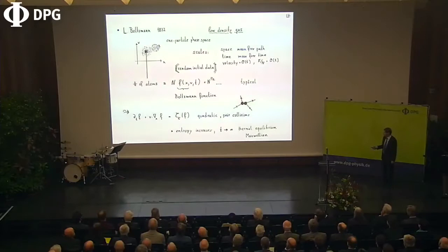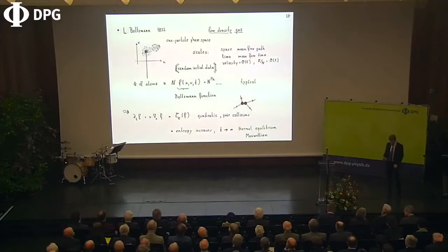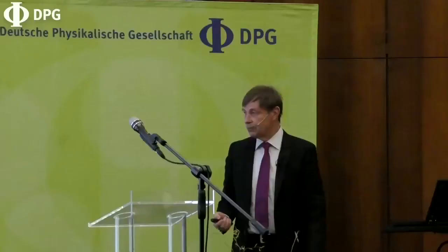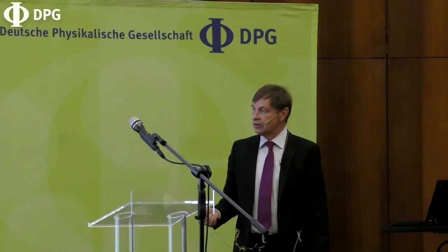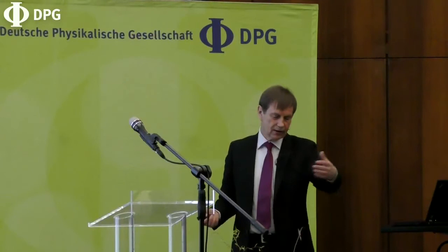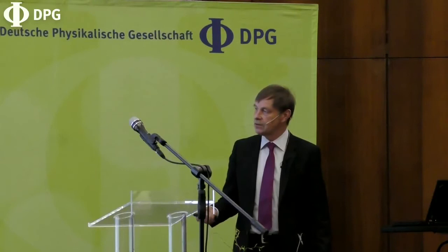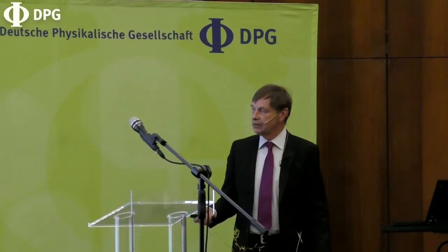What Boltzmann argued is that at a collision, the velocities of the two incoming particles can be considered as more or less independent — he assumed them to be independent. Out of this, you get a closed equation for the function f: the famous Boltzmann equation. It has a flow term that tells you particles are transported freely, and then the most interesting part is the collision term, which is non-linear — actually quadratic in f.